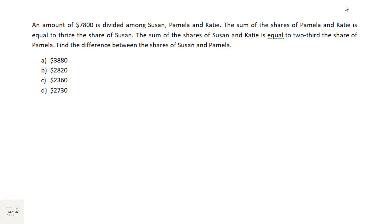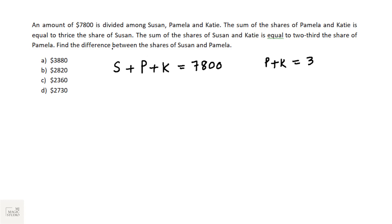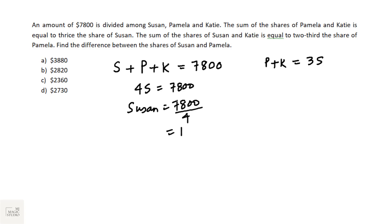Next question: an amount of 7800 is divided among Susan, Pamela and Katie. The sum of shares of Pamela and Katie equals thrice the share of Susan, so P + K = 3S. Therefore 4S = 7800, giving Susan's share as 7800/4 = 1950.